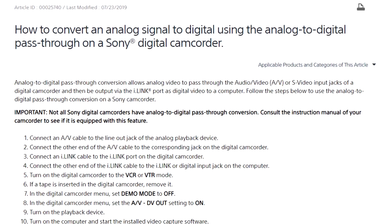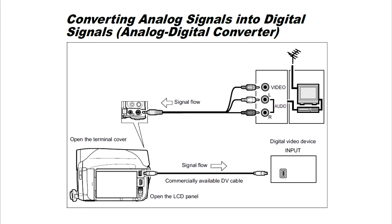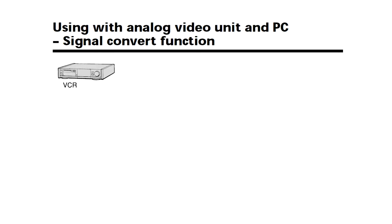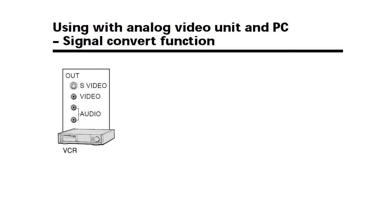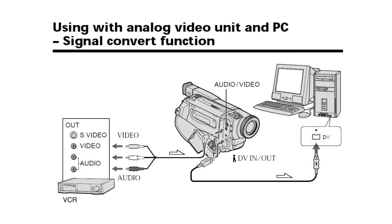If you want to digitize your analog video recordings, one way of doing that is to use analog-to-digital passthrough built into some digital DV camcorders. This function is also known as signal conversion. The catch: your computer must have an IEEE 1394 port, also known as FireWire or iLink.